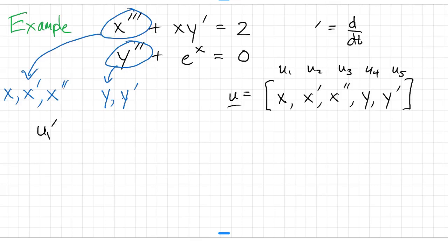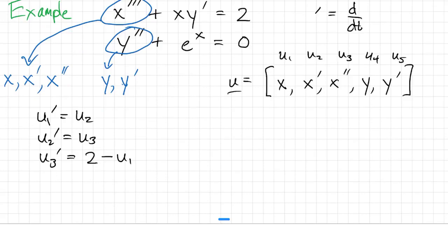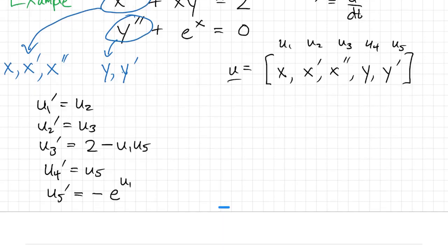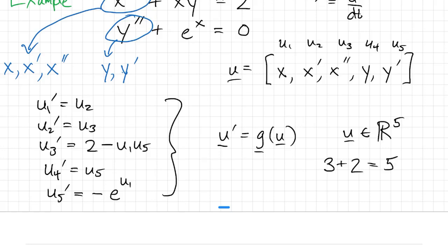After that, everything follows kind of automatically. u1 prime is x prime, that's u2. u2 prime is x prime prime, that's u3. u3 prime is x triple prime. But from the first equation, that's 2 minus x y prime. And we call that u1, u5. u4 prime is y prime, that's u5. And u5 prime is y double prime, that comes from the second ODE, that's negative e to the x. But x is u1. There's a system of five equations and five variables, or one five-dimensional equation. Now that I started with a third order equation and a second order equation, three plus two equals five. That's not a coincidence.